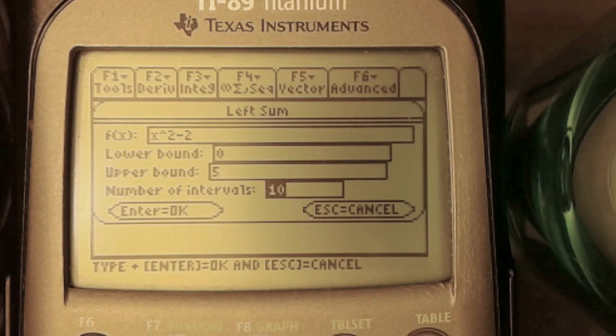Now the last step is to find out what n, or the number of partitions, should be. Remember that the higher the partitions, the more accurate your value will be. Let's start with 10 partitions.